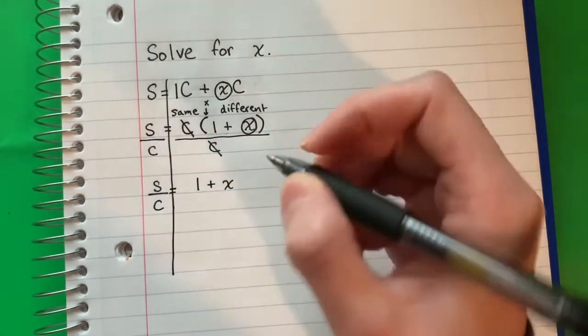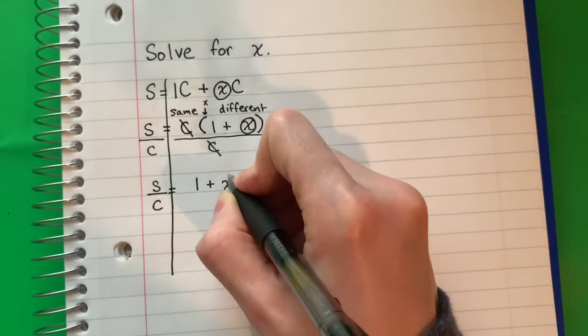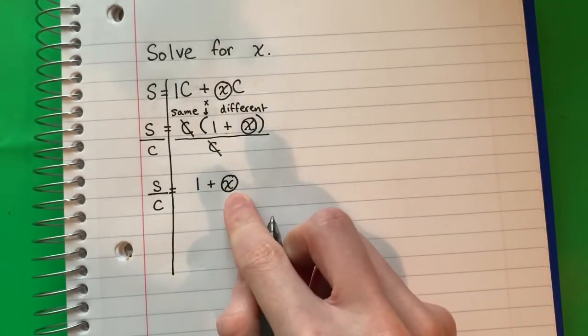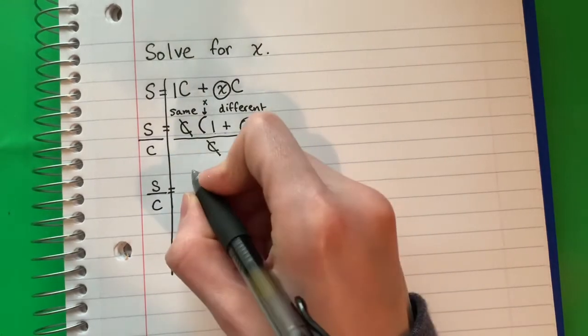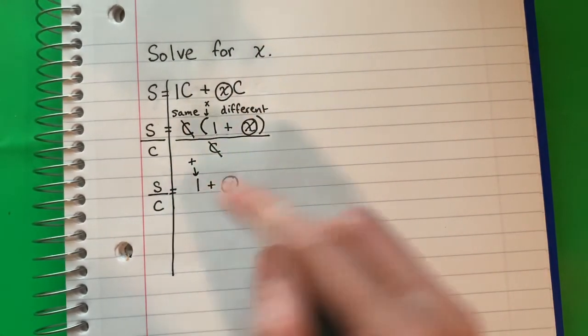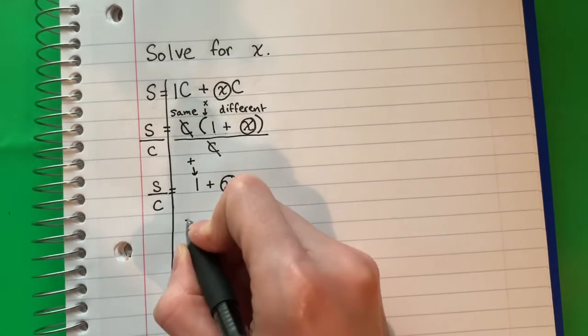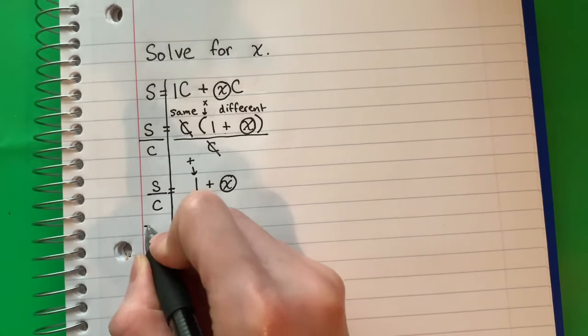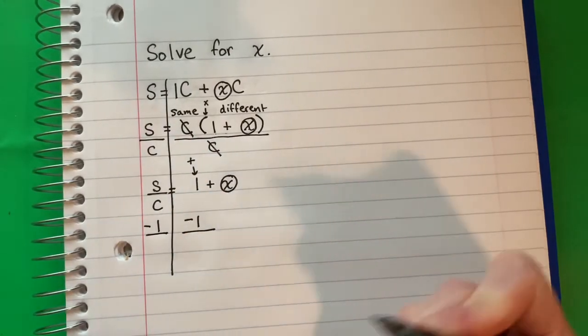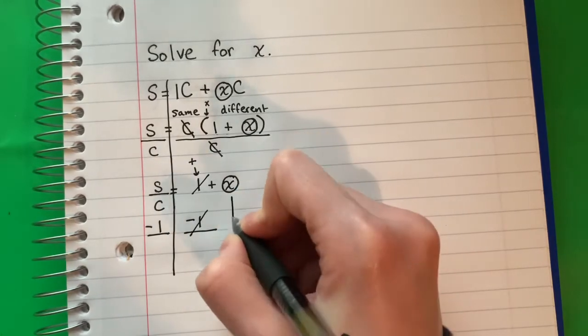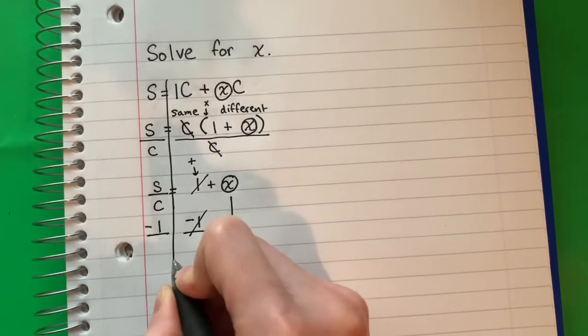Okay, so I'm going to continue. I want the x alone. I'm going to circle x. Okay, what is with x? ¿Qué está con x? It's the one. It's positive one. And the opposite of positive is negative. So I'm going to put minus one. And I'm going to copy to the other side minus one. So which one cancels? One minus one is zero. I'm going to copy down the x equals. What is s divided by c minus one?